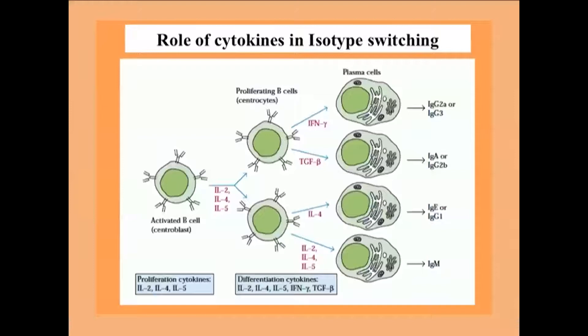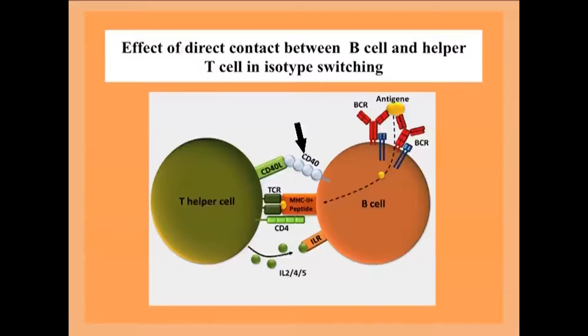In the presence of interferon gamma, IgM is switched to IgG. In the presence of TGF-beta (transforming growth factor beta), IgM switches to IgA — the mu sequence is replaced by the alpha sequence. In the presence of interleukin-4, IgM is switched to IgE. Direct contact between CD40 and CD40 ligand is also critical for class switching. CD40 is present on the B-cell surface, whereas CD40 ligand is present on the T-helper cell surface. In the absence of CD40–CD40 ligand interaction, class switching does not take place.